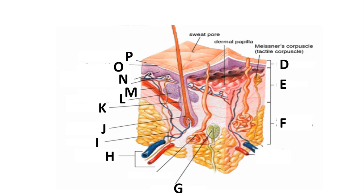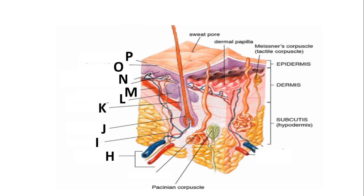D, E, and F are showing the different layers of the skin: the epidermis, the dermis, and the hypodermis. G is showing another type of corpuscle which is able to detect vibration — this is known as the Pacinian corpuscle. H is showing the blood vessels and the lymph vessels, including the vein, the artery, and the lymph vessel.